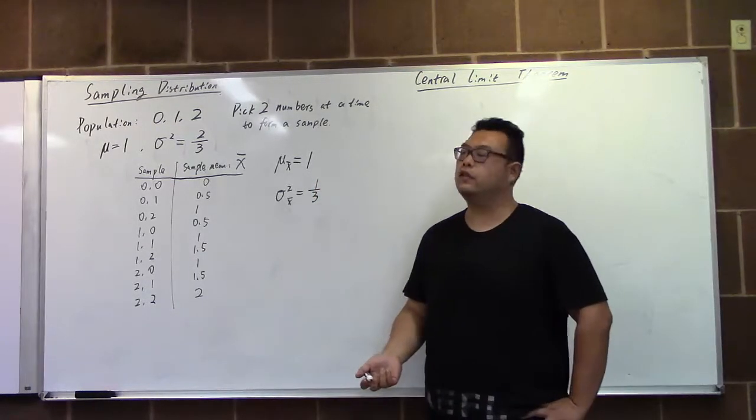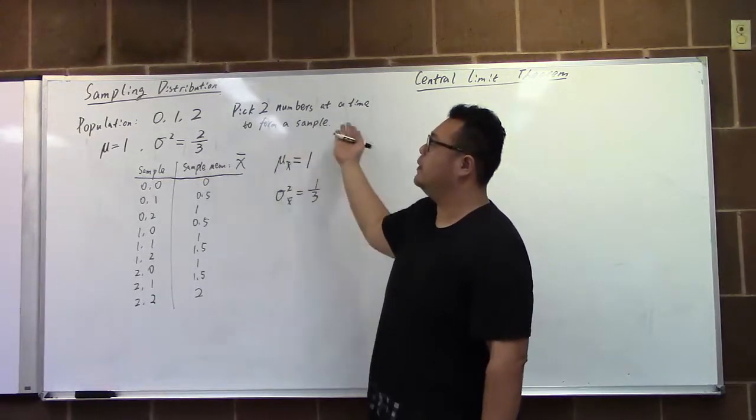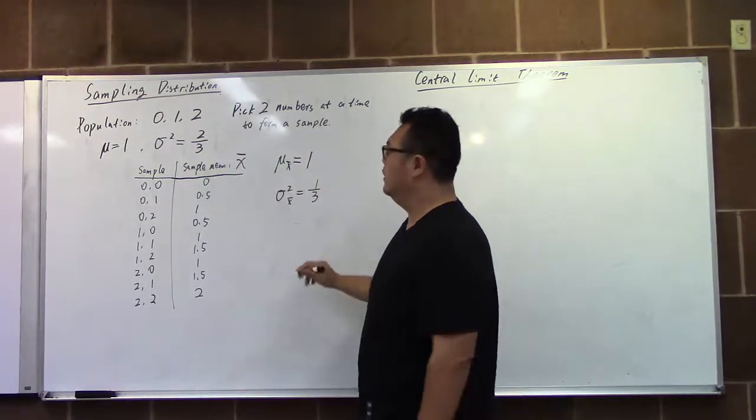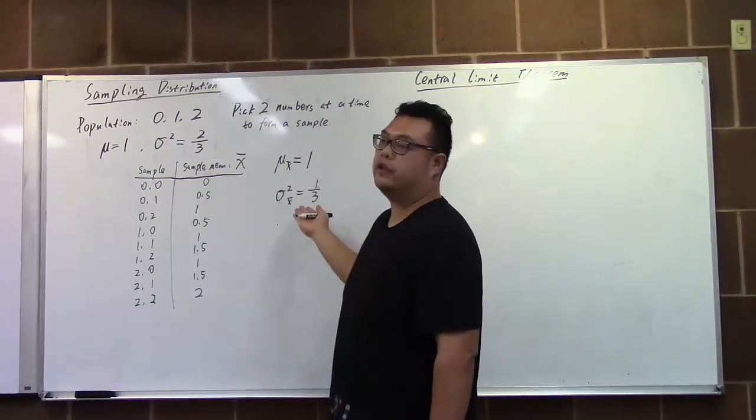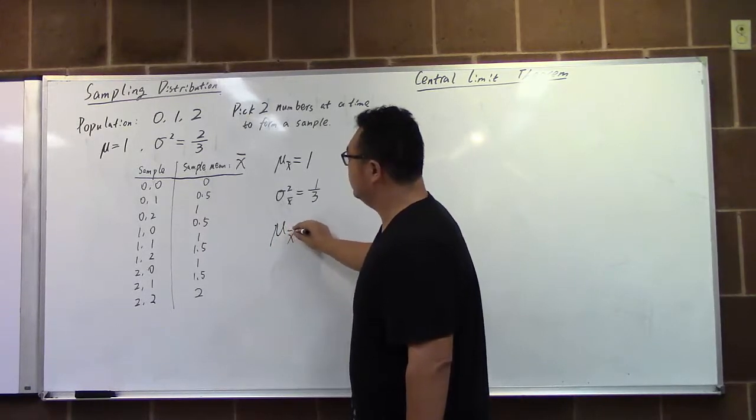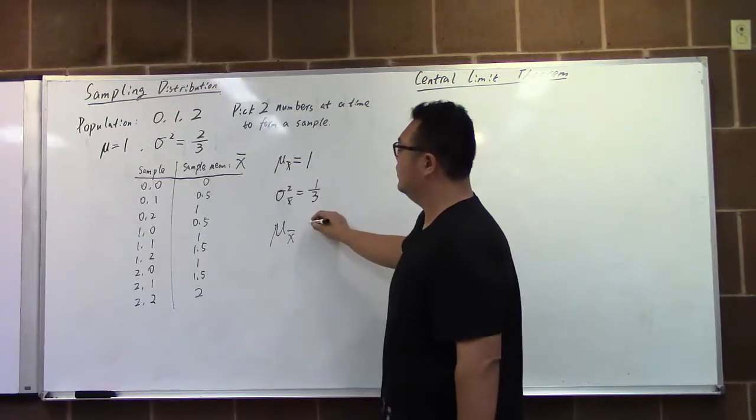What is generally true is that from the population we pick the sampling distribution, then we are able to form the sample mean. We have the sampling distribution sample mean. We have a mean equal to population mean.